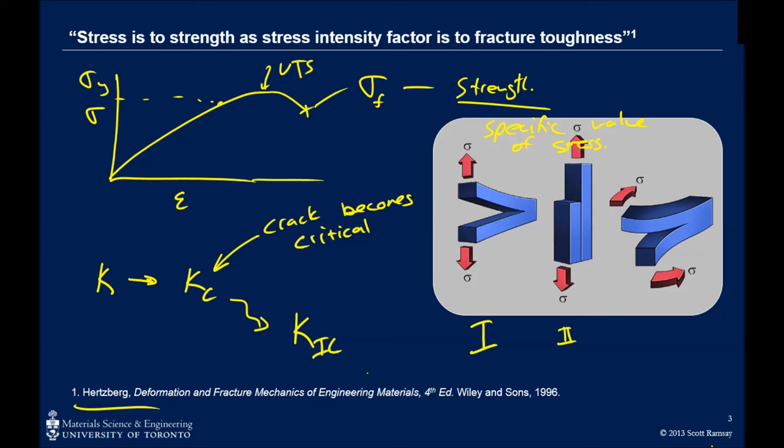Just out of interest to say here, mode 2 is sliding, and mode 3 is referred to as tearing. But mode 1 is what we're going to be interested in. That's the most common form of crack displacement that we'll encounter. And so the K1c is the fracture toughness. And remember that the fracture toughness is a specific value of stress intensity factor.